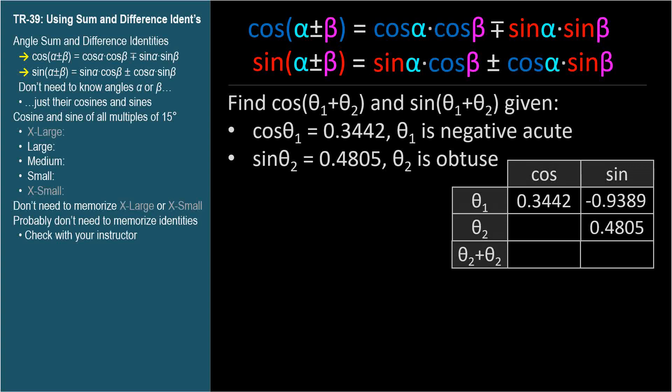The second angle, θ₂, is obtuse with a sine of 0.4805, so its cosine will be negative. Cosine θ₂ equals negative √(1 - 0.4805²), which is negative 0.8770.